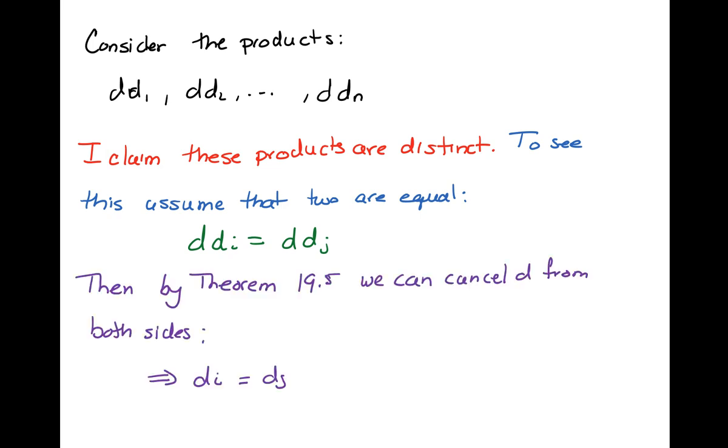Well, there's a theorem in our book that says when we're in an integral domain, we're allowed to cancel as long as the d is not zero. So we can cancel the d from both sides, and that tells us that di equals dj. So the only way that two of the products in that list could be equal is if they were the same element to begin with.